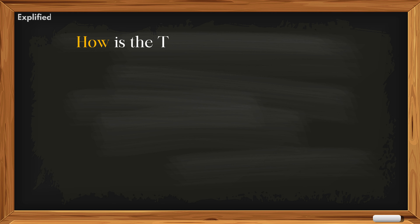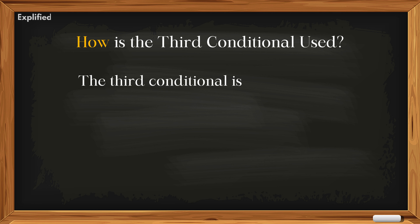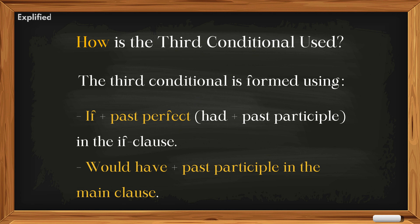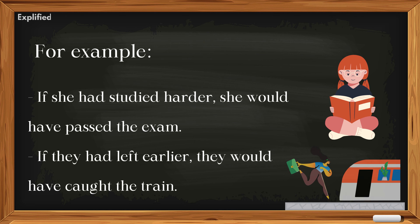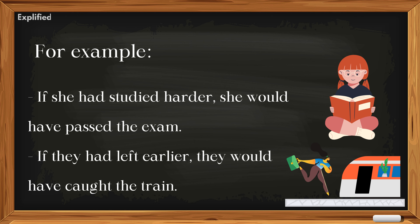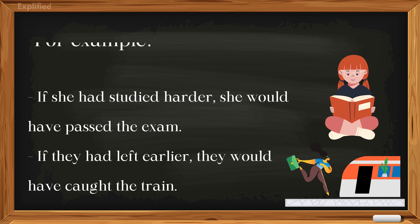How is the third conditional used? It is formed using: 'if' plus past perfect (had + past participle) in the if-clause, and 'would have' plus past participle in the main clause. For example: 'If she had studied harder, she would have passed the exam.' 'If they had left earlier, they would have caught the train.'